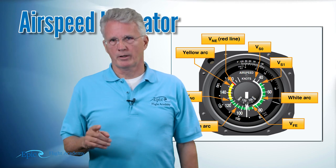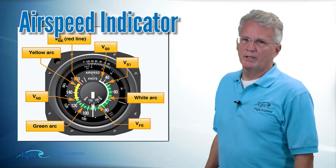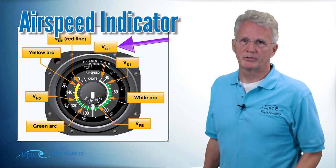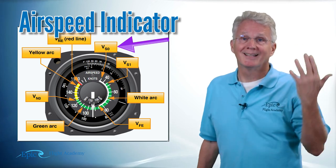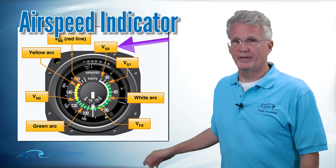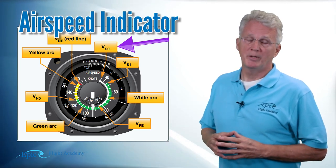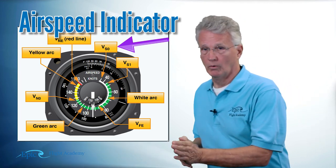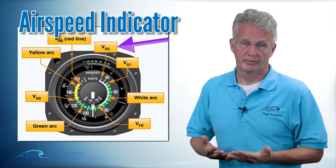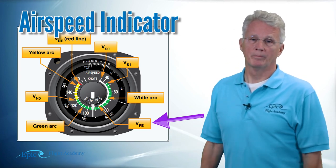Let's go back to our round dial and look at these colored arcs. The white arc on the airspeed indicator is defined at the bottom by a speed we call VSO — that's the stalling speed in the landing configuration. The top of the white arc is defined as the speed we need to be at or below to extend full flaps. That speed is VFE — FE for flap extension.